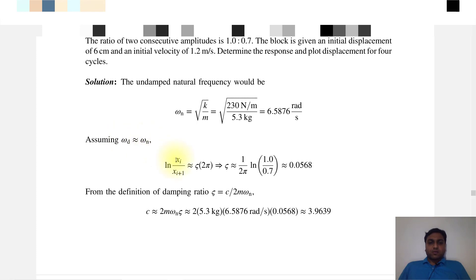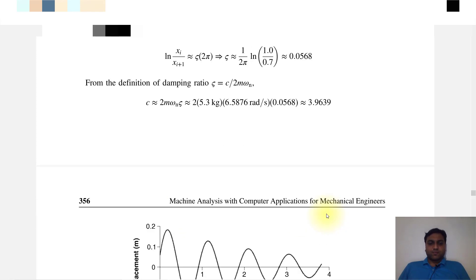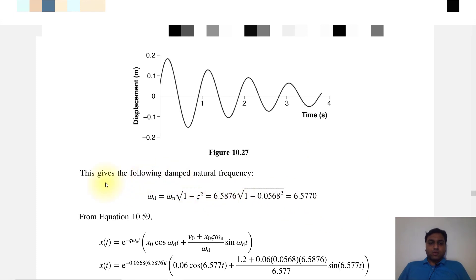Assuming the natural frequency is the same, zeta times 2π equals ln of the consecutive amplitude ratio, 1 by 0.7. So zeta equals 1 by 2π times ln(1.0/0.7), which equals 0.0568. Our damping coefficient c equals 2m omega zeta, which equals 3.96.